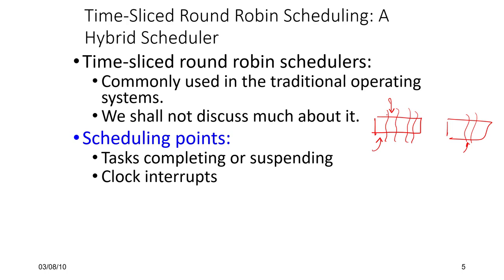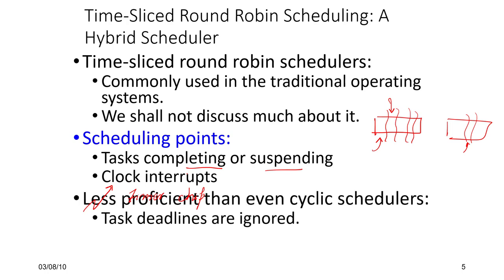This is a hybrid algorithm which modern operating systems follow. The traditional scheduling algorithm uses timer interrupts, and event-driven scheduling goes one step ahead. In a traditional scheduler, tasks completing or getting suspended — whether due to an IO call or a suspend signal — are events of interest, as are clock interrupts generated by the timer chip. Time-slice round-robin is less proficient than even cyclic schedulers because deadlines are ignored, so we will not consider it.